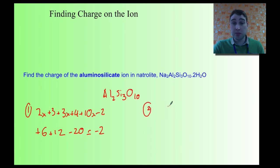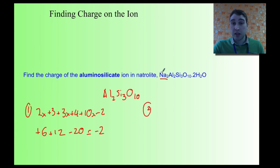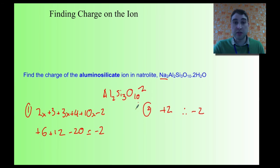Using the second way: the only things to worry about are the sodiums at the front. The water present is water of hydration — it doesn't contribute a charge. The charge on each sodium is plus one, and we have two sodiums, so the overall charge on the metals is plus two. Therefore the charge on the aluminosilicate has to be minus two. Both methods confirm: the charge on the aluminosilicate ion is minus two.